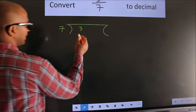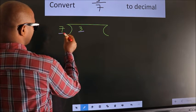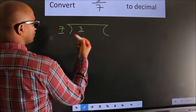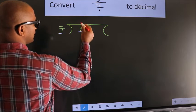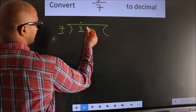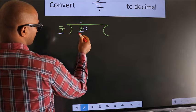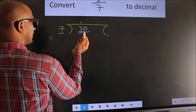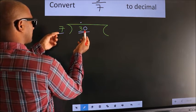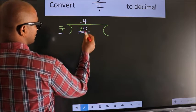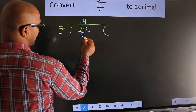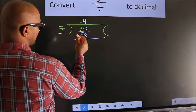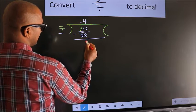Here we have 3, here 7. 3 is smaller than 7, so what we should do is put a dot here and take 0 here — so 30. A number close to 30 in the 7 table is 7 fours 28. Now we should subtract. We get 2.